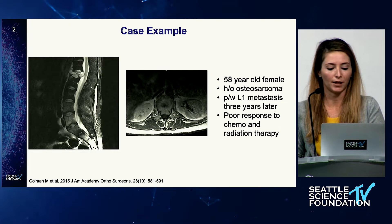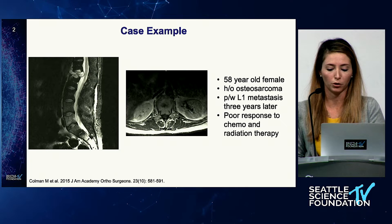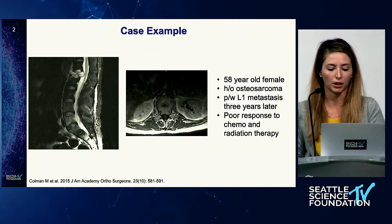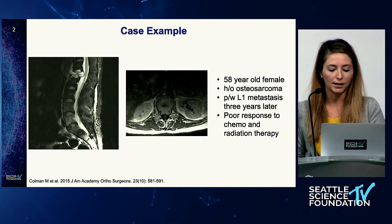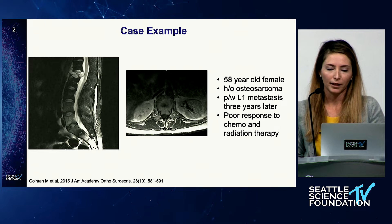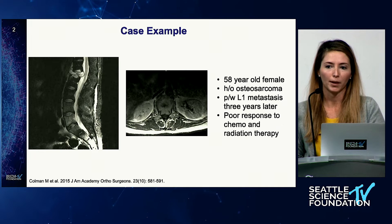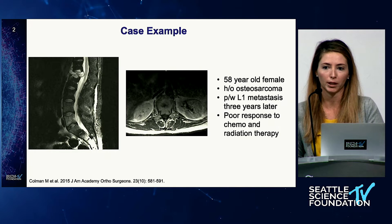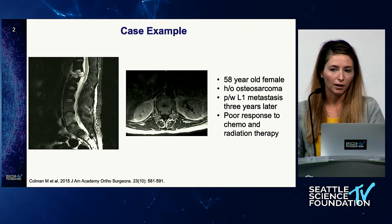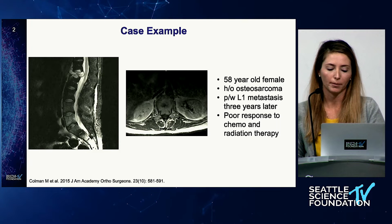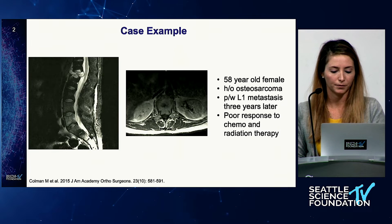Do you do a vessel occlusion test once you identify segmental feeders? Do the findings of any of these tests actually change your operative approach or potentially even hinder you from completing the en bloc resection? I used a tumor case as an example, but this could easily be a traumatic fracture like the case I showed in my last talk where the patient had fractured through her vertebroplasty. We did a lateral approach and we had a large segmental vessel right there in front of us.